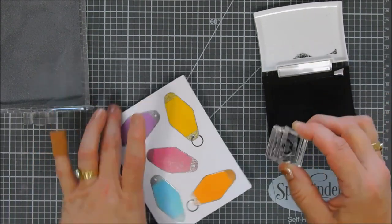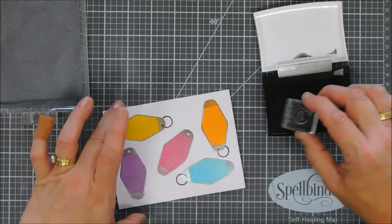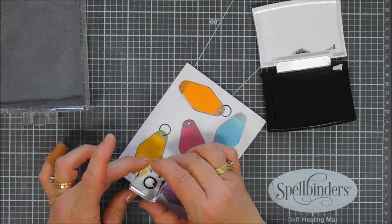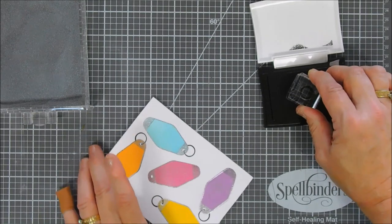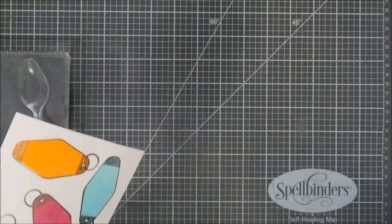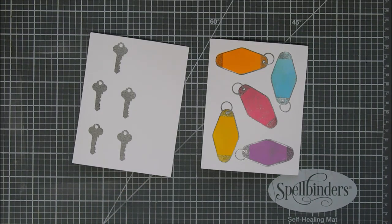I'm going to stamp this five times and then we're going to add silver embossing powder to the circle the keychain circles as well so they're nice and silvery.